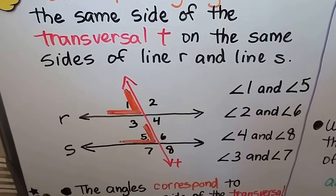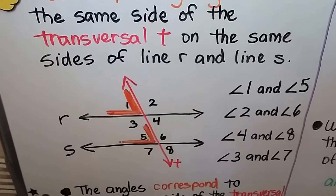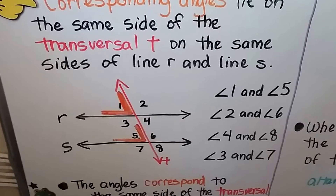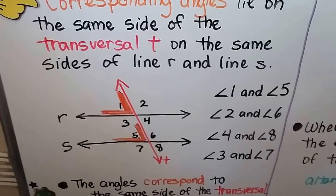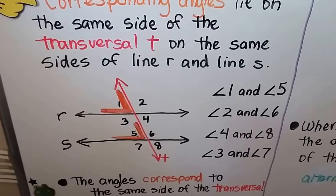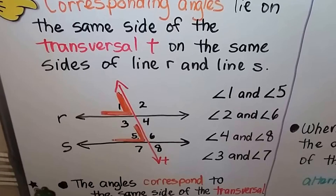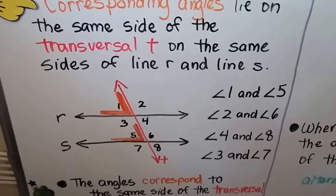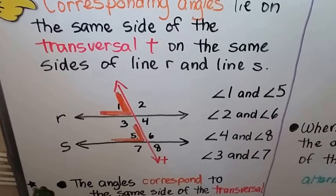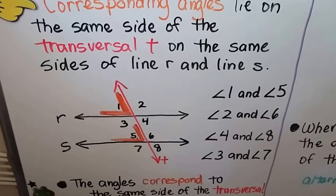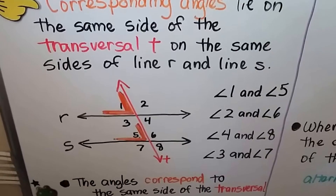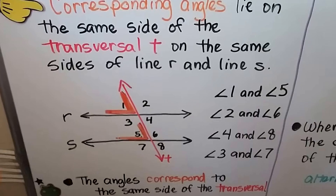So they're on the same sides of the transversal and the same sides of R and S — angle one and angle five are corresponding angles. Angles two and six are corresponding angles: both on the right side of the transversal, both on top of the lines. Angles four and eight are corresponding angles — both on the right side of transversal T and both under lines R and S. Angles three and seven are corresponding angles: both on the left side of transversal T and both underneath R and S.